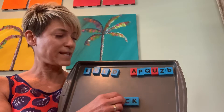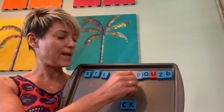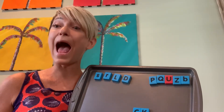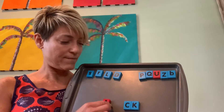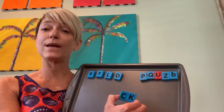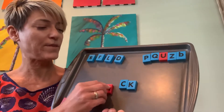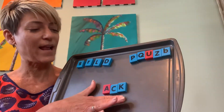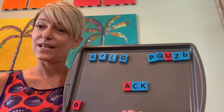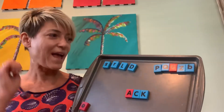Now I'm going to take off the O and put an A. So now we're going to be saying A - and still we have CK for K. Put those together: ACK. It's ACK. So now we are going to be making word families with -ACK.